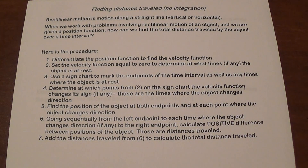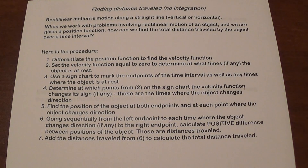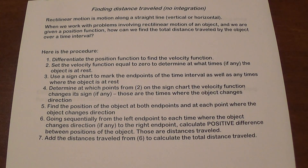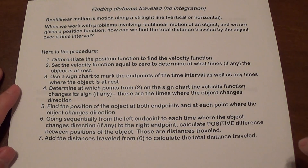We're going to find at which point the sign of the velocity function is going to change, and that's where the object is going to change direction. A sign change in velocity means a direction change for the object. Then we're going to find positions at the endpoints and each point where the object changes direction, and define the position between all the points to calculate positive differences. Finally, we are going to add the distances traveled to get the total distance traveled.